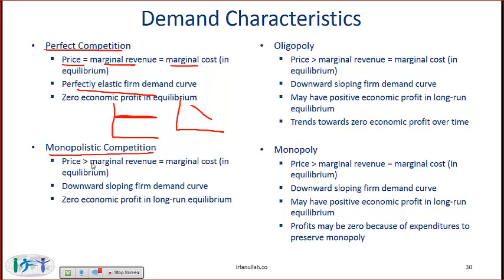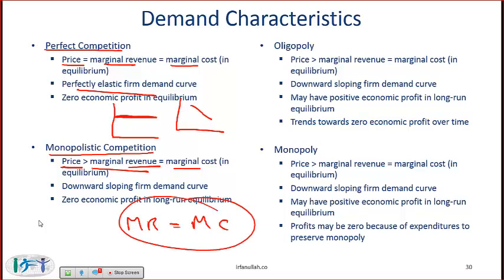With monopolistic competition, the price can be greater than marginal revenue. But for profit maximization across all structures, marginal revenue equals marginal cost — so profit is maximized when MR equals MC. With monopolistic competition we have a downward sloping demand curve for a given firm, and the general theory is that in the long run economic profit will be zero.